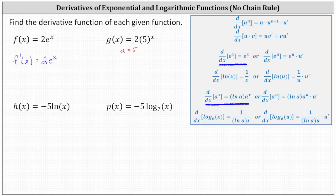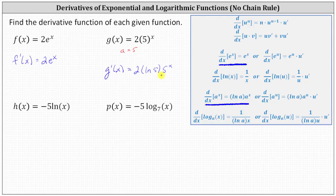Therefore g prime of x is equal to the derivative of two times five to the power of x, which is equal to two times the derivative of five to the x, which is natural log five times five to the power of x. So g prime of x equals two times natural log five times five to the power of x.